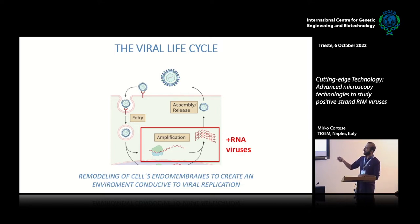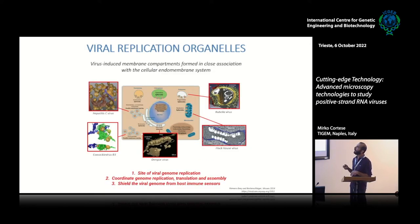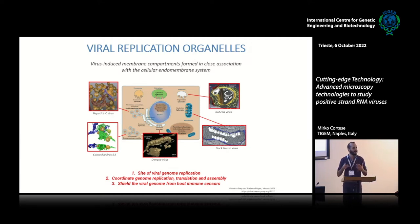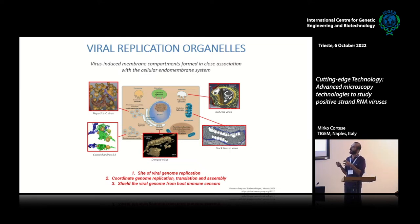RNA viruses need to protect their genome, and they do so by remodeling the cellular endomembrane system. They reshape the cell to create an environment where the genome can be protected. We call these viral replication organelles — a novel entity, a specialized endomembrane structure induced by the virus, where genome replication takes place. Thanks to electron microscopy, we now know the ultrastructure of this replication organelle for many kinds of positive-strand RNA viruses.